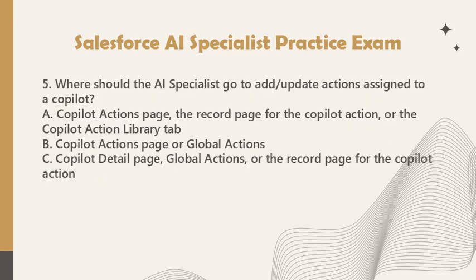Question 5: Where should the AI specialist go to add or update actions assigned to a copilot? A. Copilot Actions page, the record page for the copilot action, or the Copilot Action Library tab. B. Copilot Actions page or global actions. C. Copilot detail page, global actions, or the record page for the copilot action.